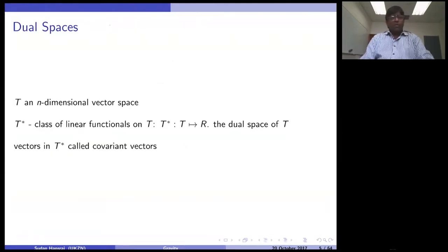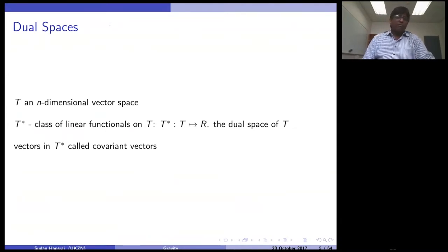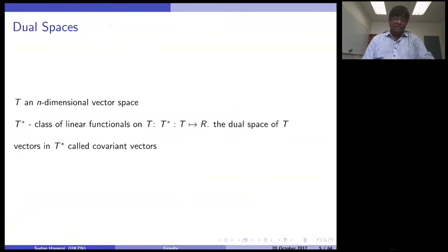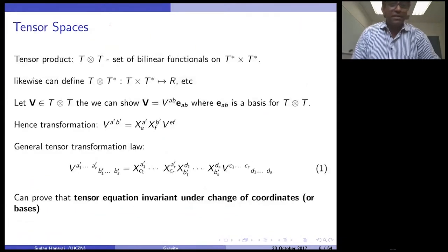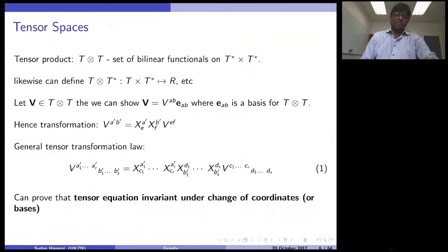Let me define what is called a dual space. If you have a vector space V of n dimensions, define a dual space V-star. The dual space is a class of linear functionals that map to the real numbers. Vectors in V-star are called covariant vectors. These are things dealt with in our honors courses — we can't go into all the details here. Now that we have understood the concept of a vector space, we can build more heavy machinery and construct a tensor space.